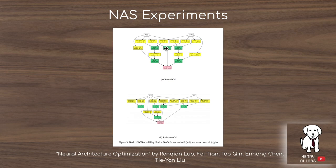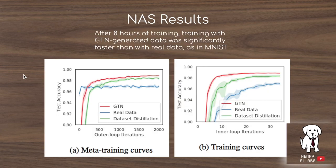Within this search space, there are a ton of different ways to connect nodes and construct the normal and reduction cells. The plots show their results on neural architecture search: after about eight hours of training the generative teaching networks, the datasets are able to train models much faster than using real data.